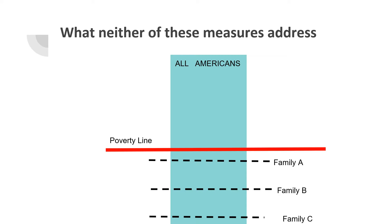Neither the OPM nor the SPM addresses something that we will call the depth of poverty. Though many Americans may fall below the poverty line, we believe that each household may deal with a different type or degree of poverty. As shown in the graph, all Americans below the red line are officially considered poor, yet we would argue that families A, B, and C are living in very different conditions — family C is probably worse off than family A because of their depth below the poverty line.